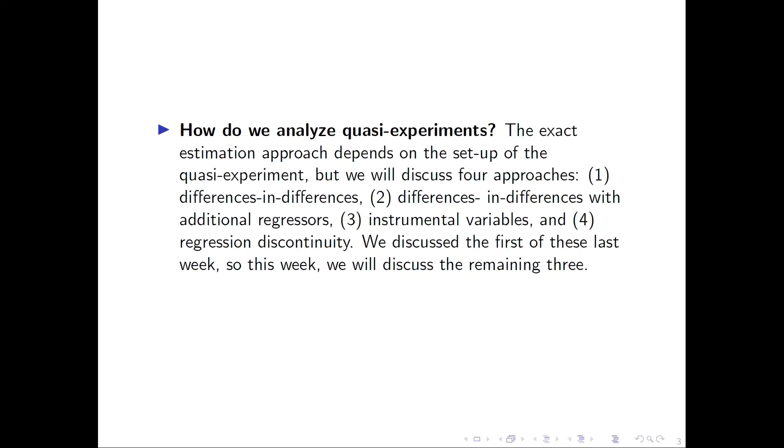There are four methods that we use for analyzing quasi-experiments. We can use the difference in differences, or we can augment this differences in differences with additional regressors. We can also use instrumental variable regression, which we saw in a previous video, and we can use regression discontinuity. The difference in differences with additional regressors, instrumental variables, and regression discontinuity we will talk about in this lecture.